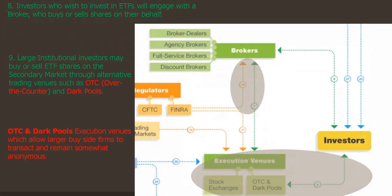Step eight: investors who wish to invest in ETFs will engage with a broker or broker dealer who buys or sells shares on their behalf. Number nine: large institutional investors may buy or sell ETF shares on the secondary market through alternative trading venues, such as the infamous OTC market and dark pool market, which we all know is a way for large firms to transact and remain somewhat anonymous and not affect the price action.